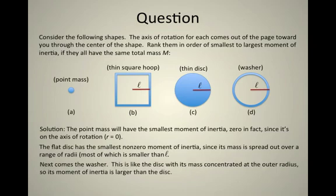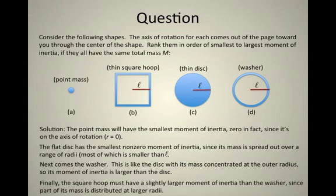The next moment of inertia in size, the next one up, will be the washer itself. Since all elements of mass are at a distance L from the center of rotation, it's going to be bigger than the disk, but it won't be as big as the square, because the square will have some elements of its mass at a distance further than L. If you think about up here in the corner,